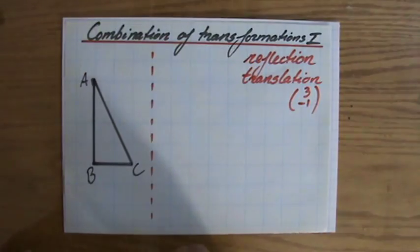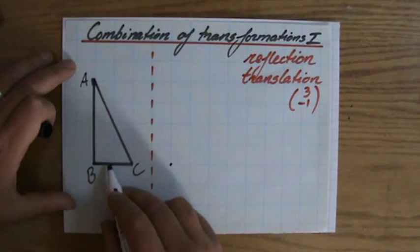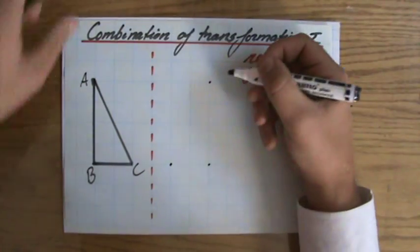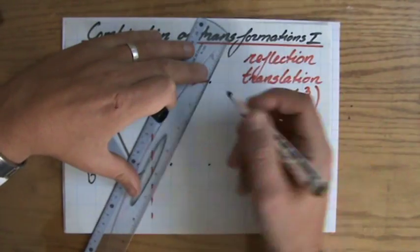So first I will reflect it. I'm going to do this relatively quickly. So that's going to be point C, and point B is one, two, three, one, two, three. Yeah, and a reflection only changes the position of the shape, doesn't it?